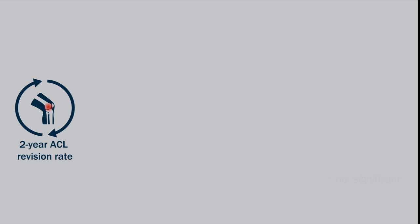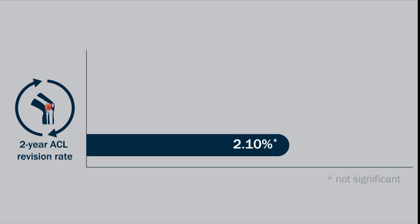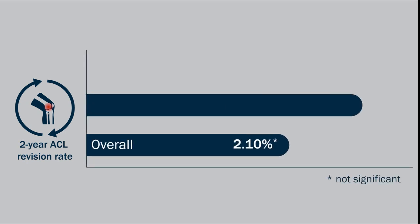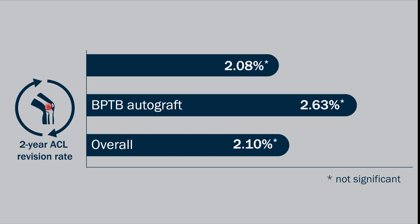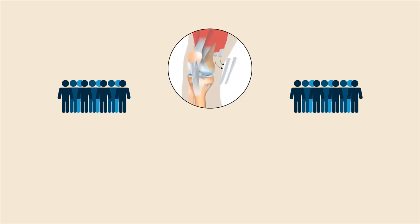the two-year rate of ACL revision was 2.10% overall, with a rate of 2.63% for patients treated with patellar tendon autografts and 2.08% for patients treated with hamstring tendon autografts. Among the patients treated with hamstring tendon autografts,